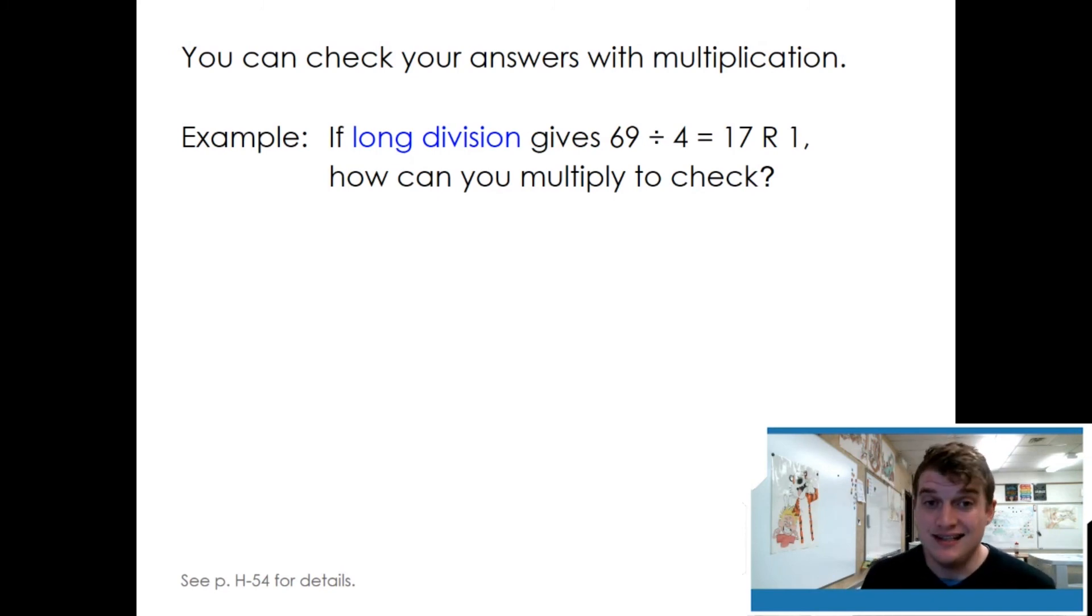For example, sixty-nine divided by four equals seventeen with a remainder of one. We can check that by multiplying seventeen times four. Multiplying by four is the same as doubling twice, so let's double twice because doubling is easy. Seventeen doubled is thirty-four. Thirty-four doubled is sixty-eight. I didn't quite get the same answer. What am I forgetting? The remainder. I still need to add one to my answer to get sixty-nine.